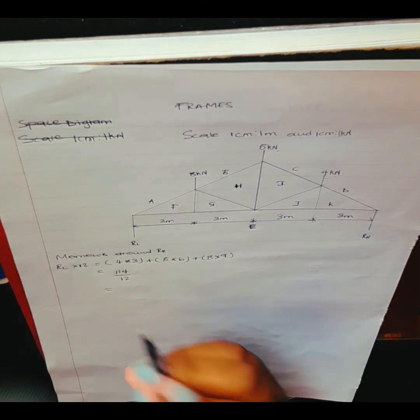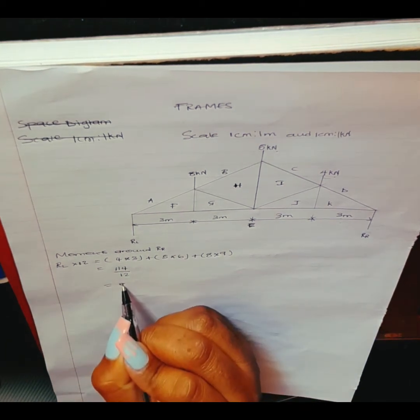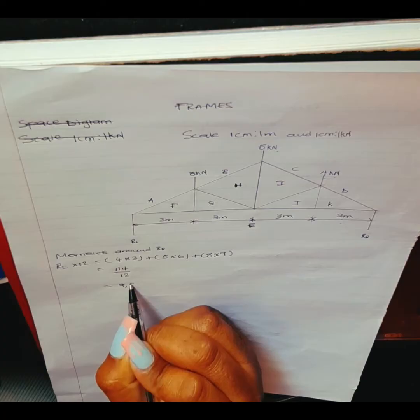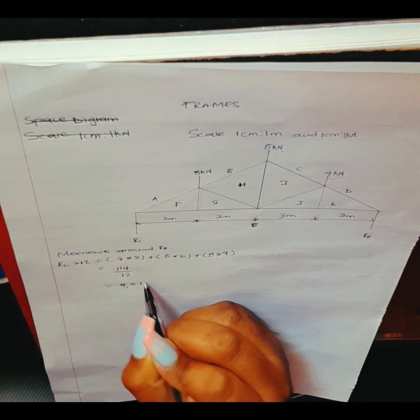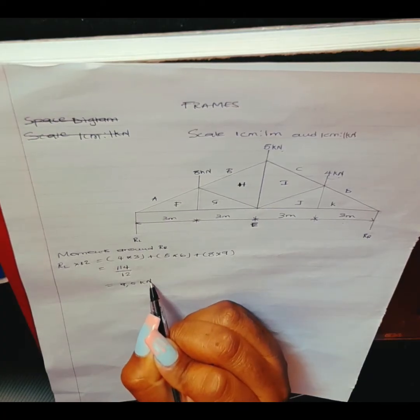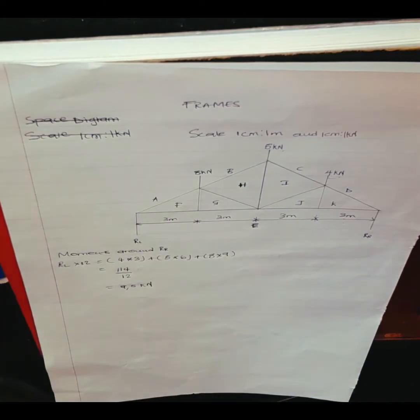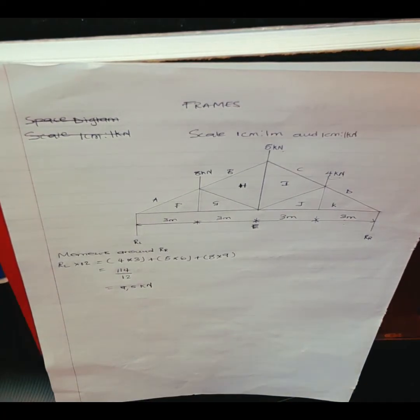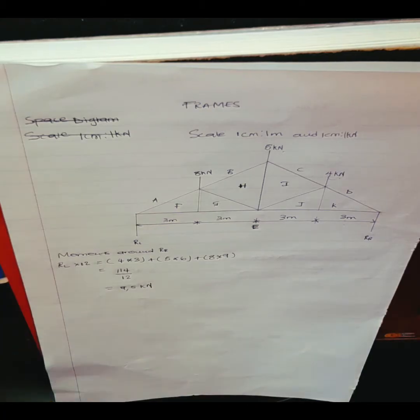We divide 114 by 12 and we get 9.5 kilonewton. So the left-hand reaction RL = 9.5 kN. I hope everyone understands this part. Now let's go to the right-hand reaction.